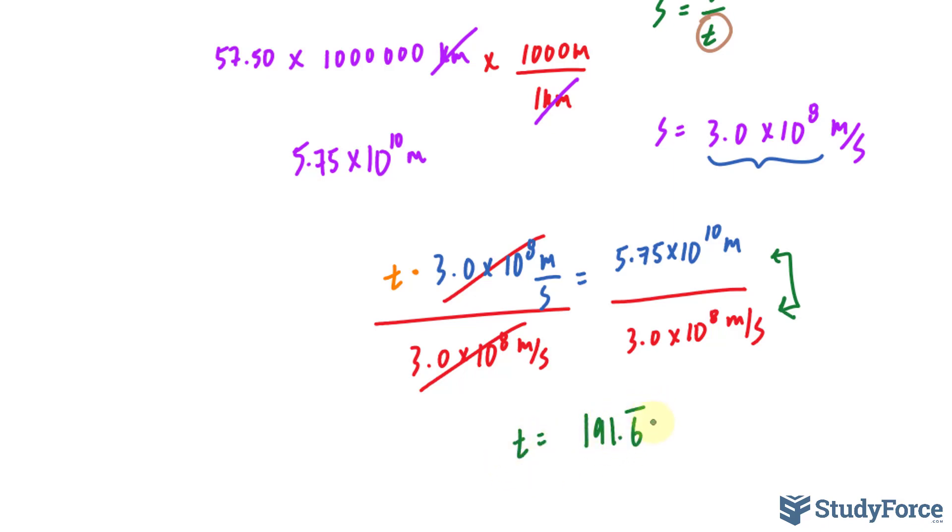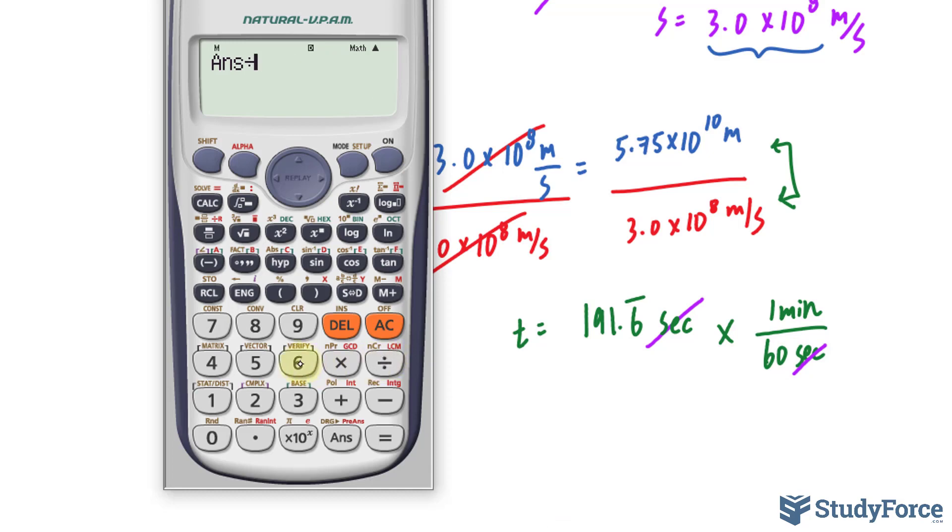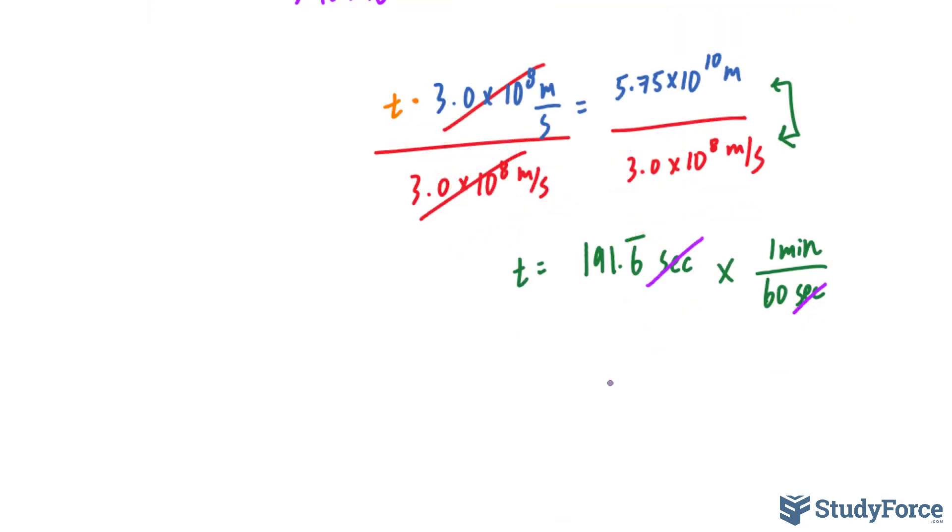That's the value of T. The conversion factor for seconds to minutes is that for every 60 seconds, you have one minute. Everyone knows that. So, multiplying these out, the units cancel. The value on our screen divided by 60 gives us roughly 3.19 minutes.